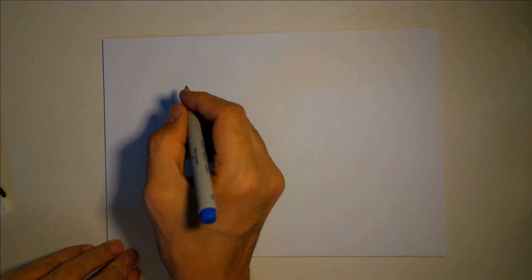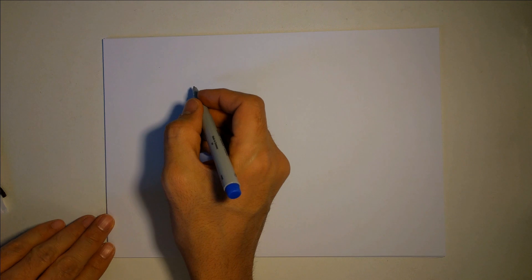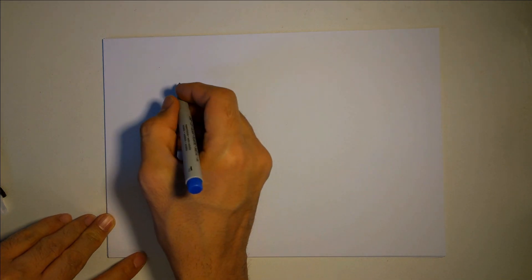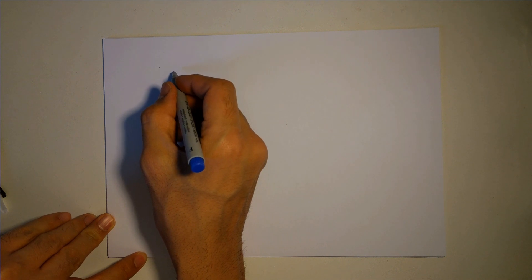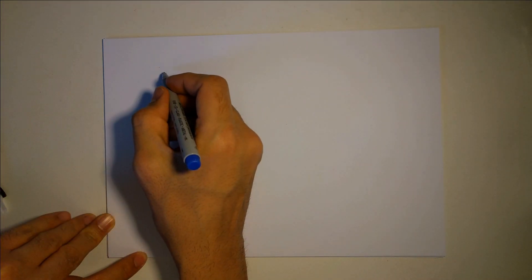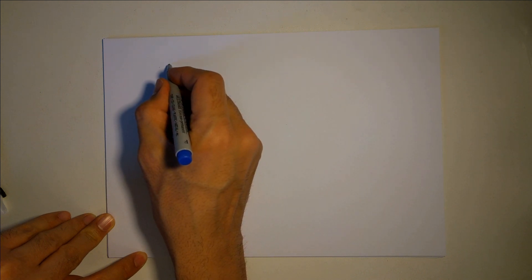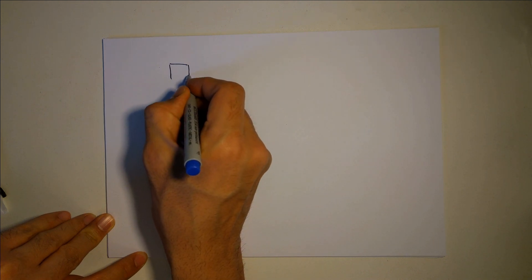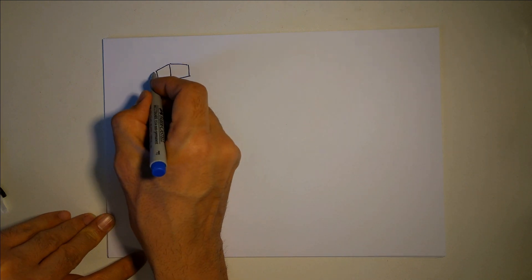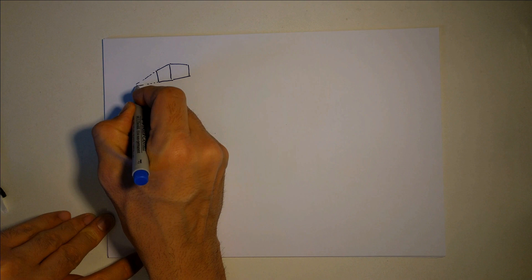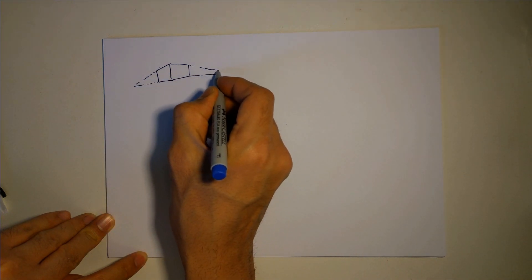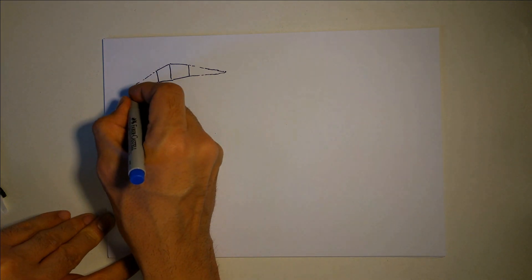Now I'm going to talk about the vanishing point. What is a vanishing point? If you're familiar with perspective, you know that if you look at a building or two railroads in an image, all the parallel lines will eventually converge to a point, and this is called a vanishing point.